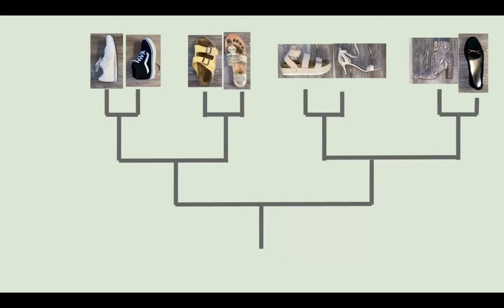Now I'm going to explain a rooted phylogenetic tree that I made from shoes. This tree is an example of cladogenesis because of the different types of shoes that have split and evolved from one lineage. Here we have our OTUs on the top. OTUs are operational taxonomic units, which is just a fancy phrase for the different species, or in this case shoes, that we compare in phylogenetic trees.